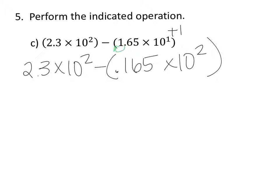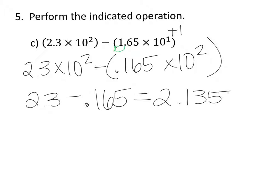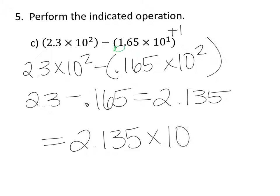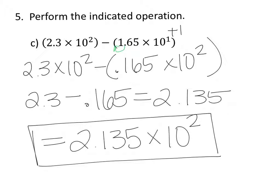So now that we have the same exponents, we can subtract the numbers. 2.3 minus 0.165 equals 2.135, and we're going to keep the same exponent. So then we can write our final answer as 2.135 times 10 to the 2nd power. And remember that we want scientific notation in our final answer, so the number needs to be between 1 and 10.